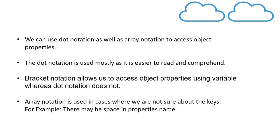There are certain advantages of using bracket notation. Bracket notation allows us to access object properties using a variable name. You can specify the property name inside a variable and use that variable to access the property value from the object. In dot notation, it is not possible to use variables, because dot notation expects the actual name of the property after the dot.